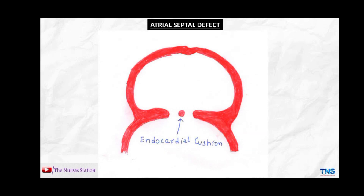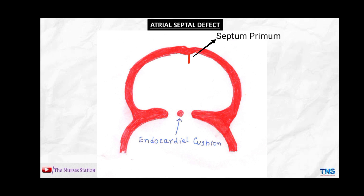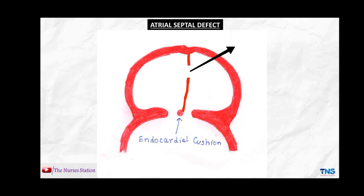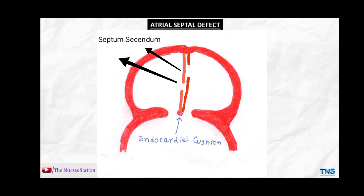Initially the left and right atria are not separate during fetal life. A tissue called the septum primum grows downward, slowly creating two separate chambers and fusing with the endocardial cushions, closing the space called the ostium primum. Meanwhile a hole appears at the upper area called the ostium secundum, or the second opening. Then the septum secundum grows downward just to the right of the septum primum and covers the ostium secundum, leaving a small opening called the foramen ovale.